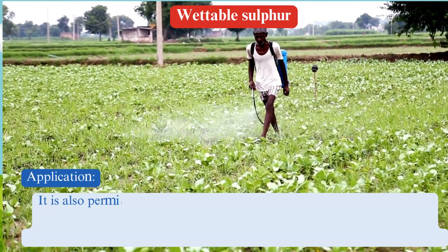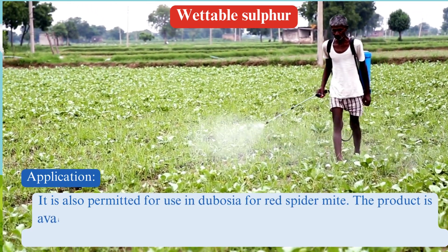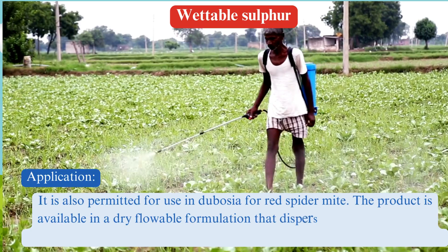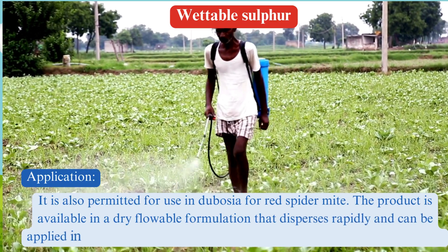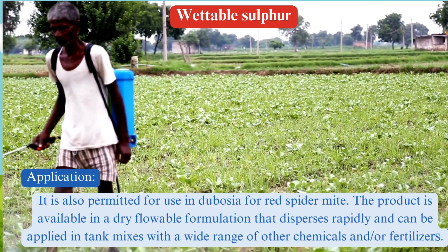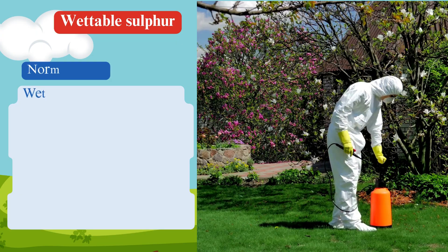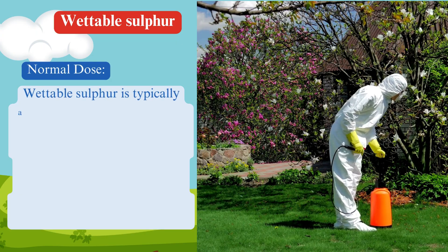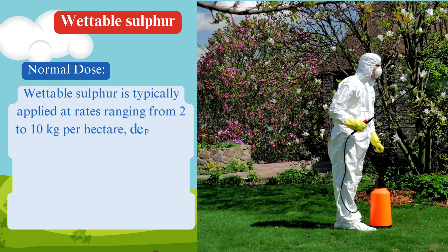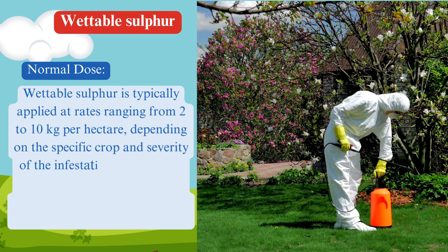It is also permitted for use in dubogia for red spider mite. The product is available in a dry, flowable formulation that disperses rapidly and can be applied in tank mixes with a wide range of other chemicals and/or fertilizers. Wettable sulfur is typically applied at rates ranging from 2 to 10 kilos per hectare, depending on the specific crop and severity of the infestation.